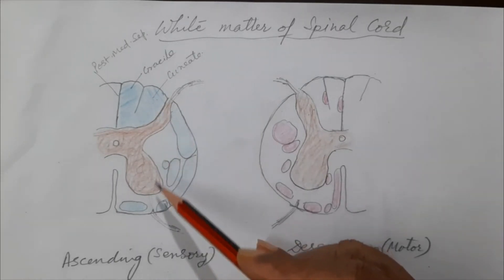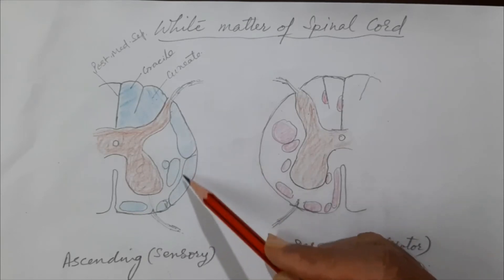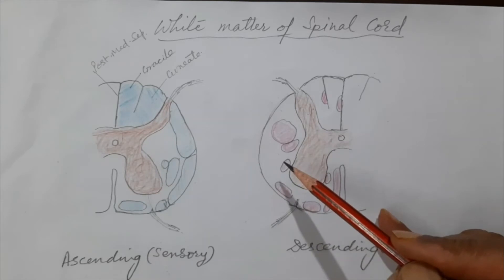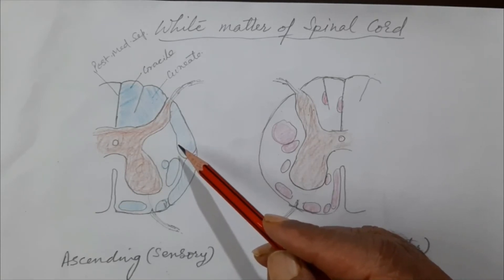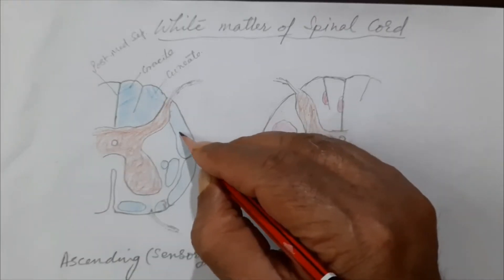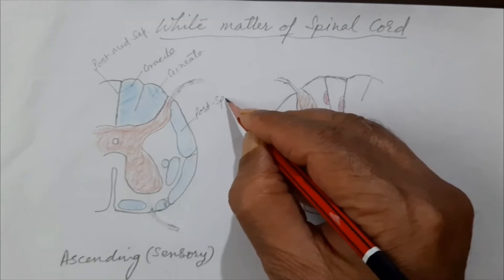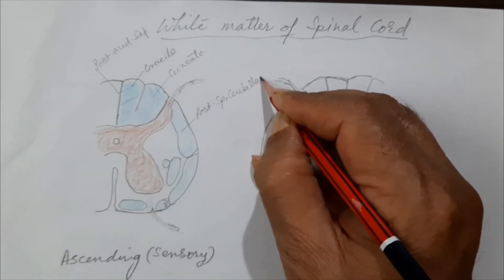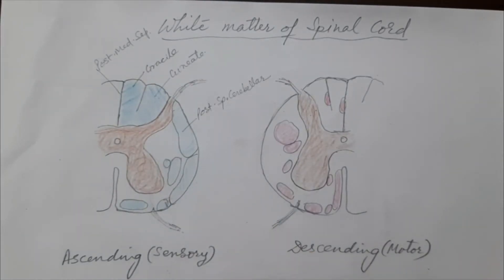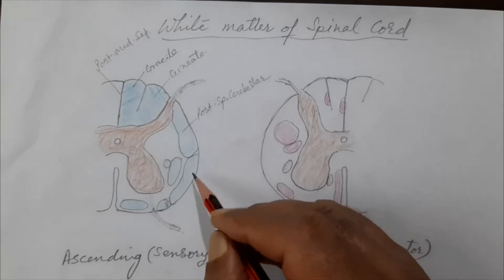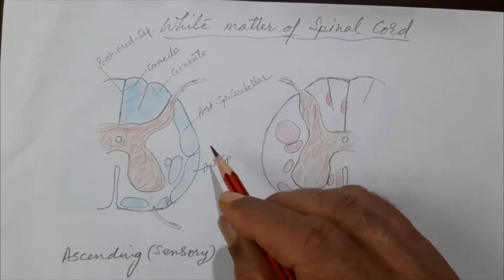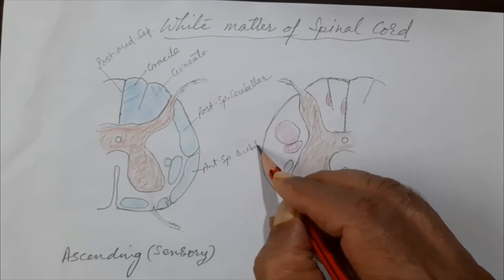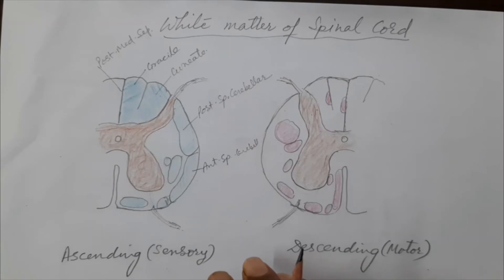The lateral funiculus contains multiple tracts. For sensory tracts: there is the posterior (dorsal) spinocerebellar and the anterior (ventral) spinocerebellar tract. Both go to the cerebellum — not the cerebrum. They are called anterior and posterior spinocerebellar tracts.